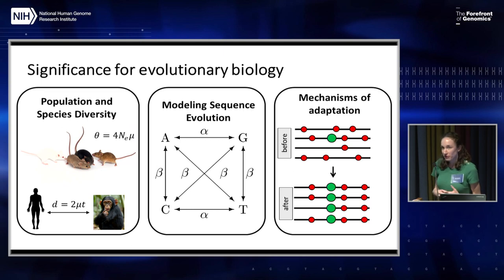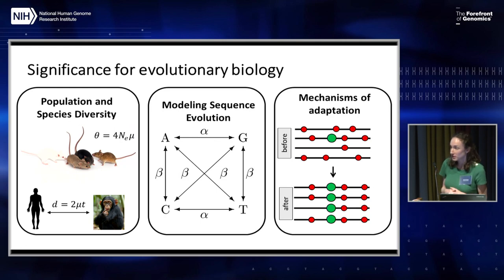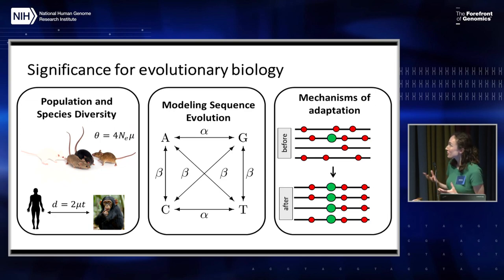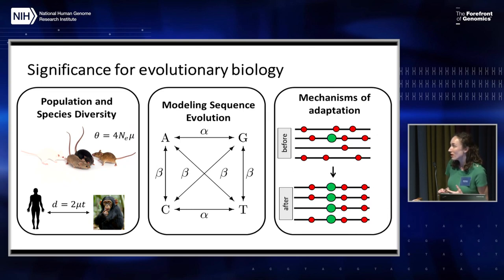Knowledge of how new mutations accumulate and the rate of mutations is really of critical importance for evolutionary biology. The mutation rate, mu, is a key determinant of the level of genetic diversity within a population. It also helps determine the level of divergence between two species. In order to build phylogenies, we invoke models of nucleotide substitution that reflect how new mutations interact with natural selection and genetic drift over time. Knowledge of the mutation rate also weighs in on our understanding of how organisms adapt to their environment, notably the relative importance of adaptation from standing genetic variation versus new mutation.